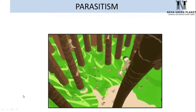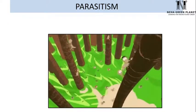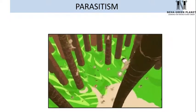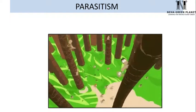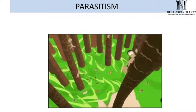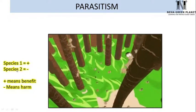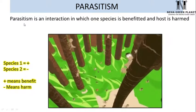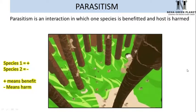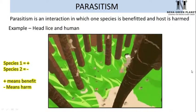In parasitism, consider head lice on a human host. Head lice suck blood from the head so they are getting benefited, while the human host is harmed. Species 1 — the lice — are benefited and species 2 — the humans — are at harm. Parasitism is an interaction in which one species is benefited and the host is harmed. Example: head lice and humans.